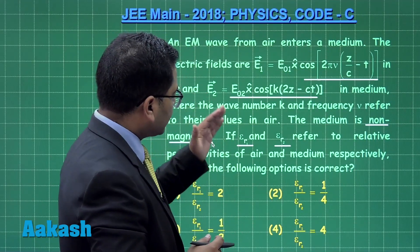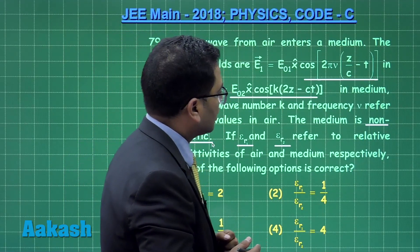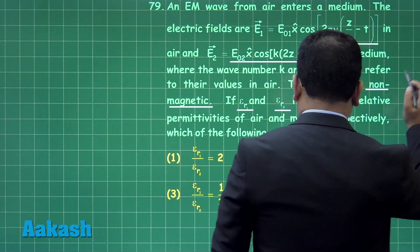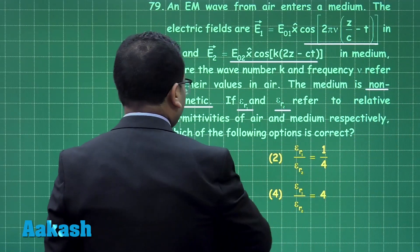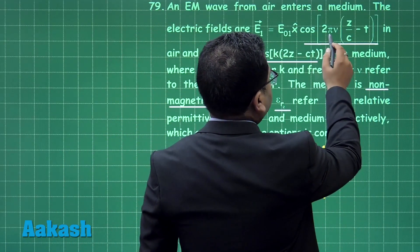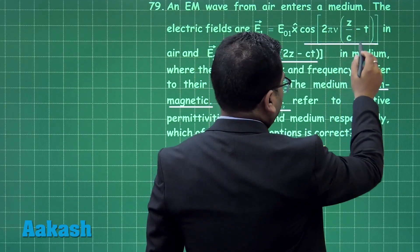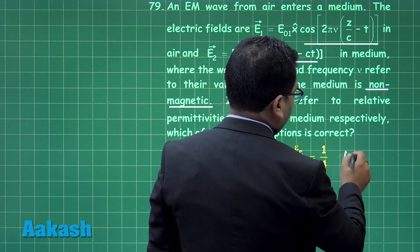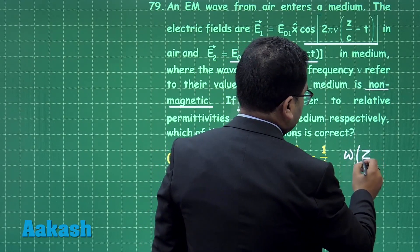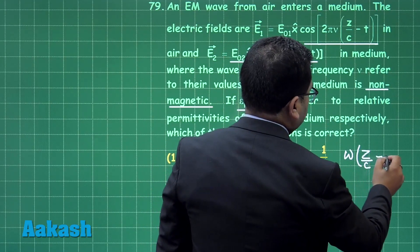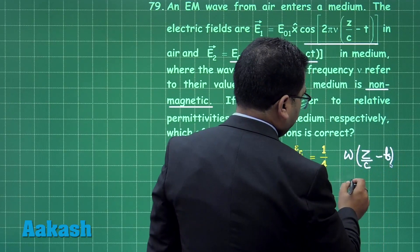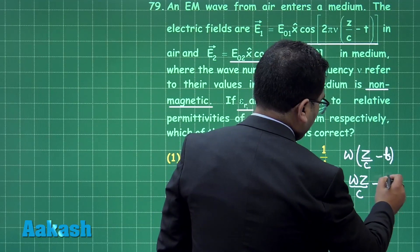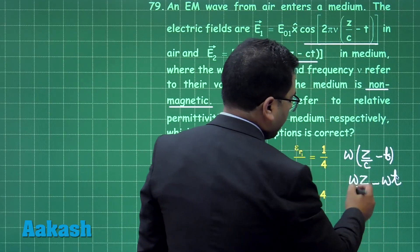Let's see the solution. Looking at the first field, this is omega, and omega z by c minus omega t. I'll write the phase part: omega z by c minus t.